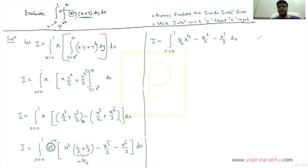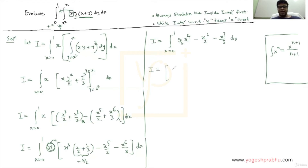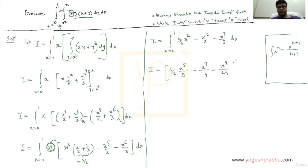This is a very simple integral. The formula is: the integration of x raised to n is x raised to n+1 upon n+1. Applying this formula: I equals 5/6 times [x raised to 5 upon 5, minus x raised to 7 by 14, minus x raised to 8 by 24], with x going from 0 to 1. The 5 in 5/6 and the 5 in the denominator cancel.